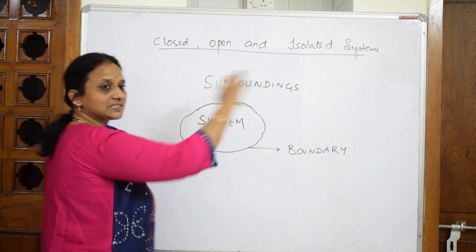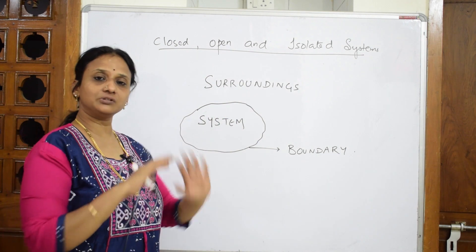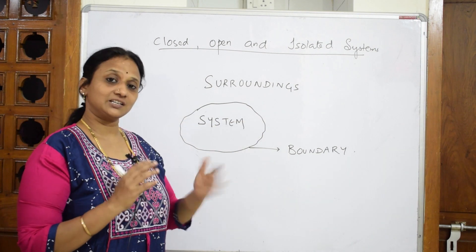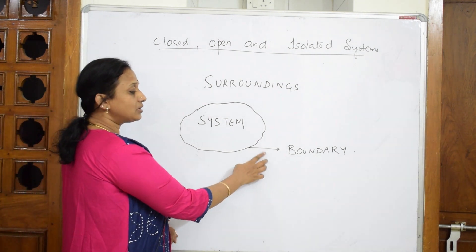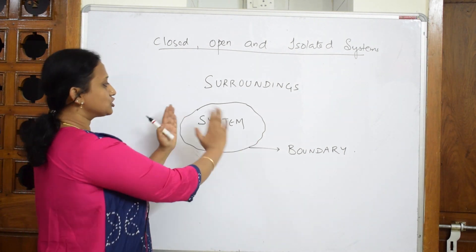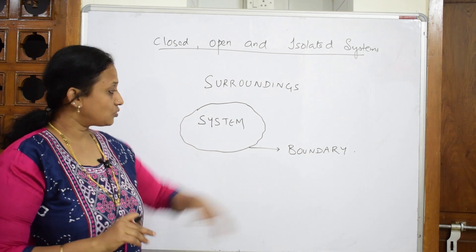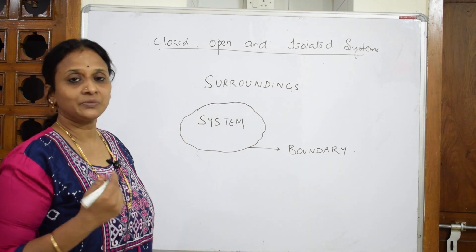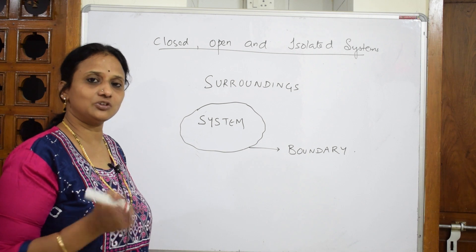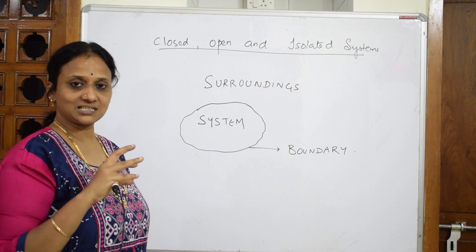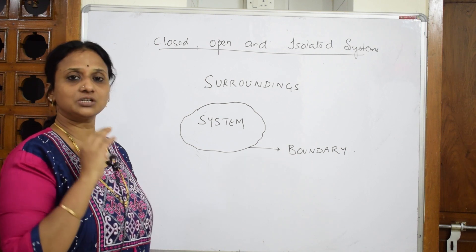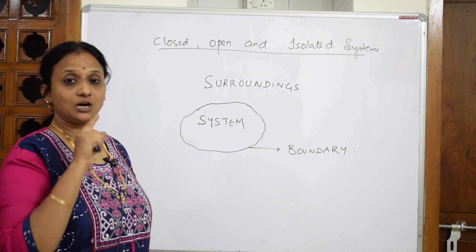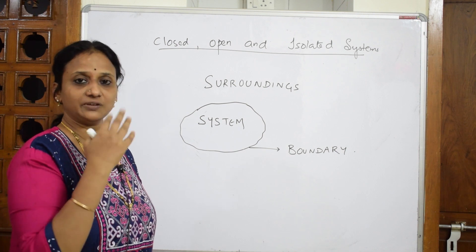The remaining part around the system — everything left out around it — is called surroundings. The boundary is an imaginary line which separates the system from the surroundings. For example, in the lab, the test tube is under study — that's the system. The area around the test tube is the surroundings, and the border where energy exchange happens is the boundary.